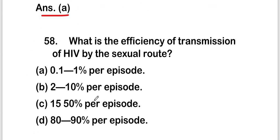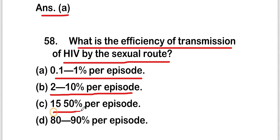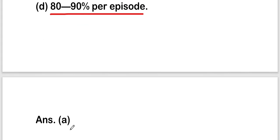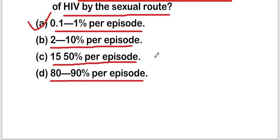The next question is: what is the efficiency of transmission of HIV by the sexual route? Options are 0.1 to 1% per episode, 2 to 10% per episode, 15 to 50% per episode, or 80 to 90% per episode. The right answer is option A, that is 0.1% to 1% per episode.